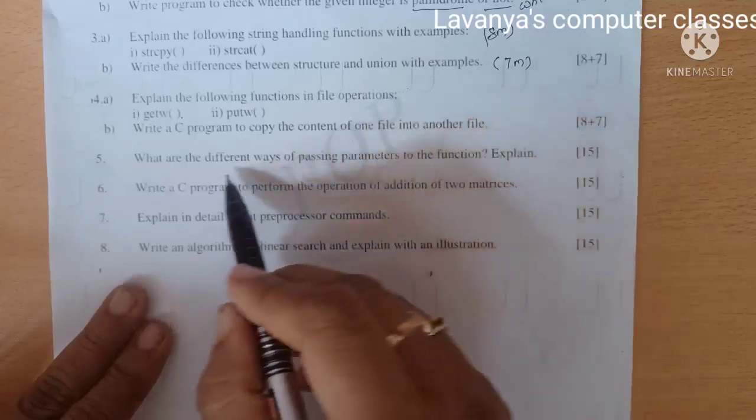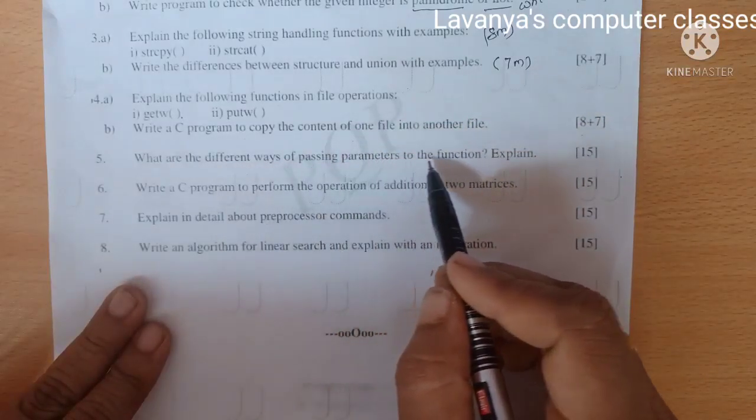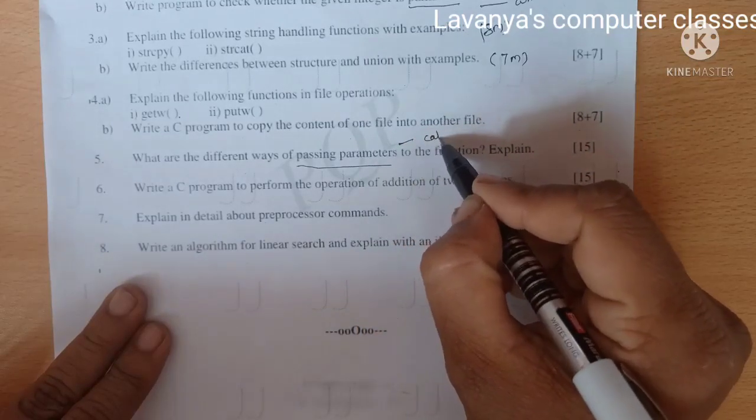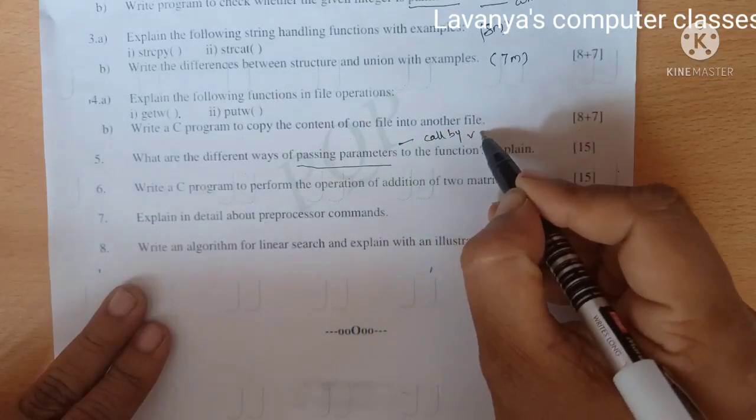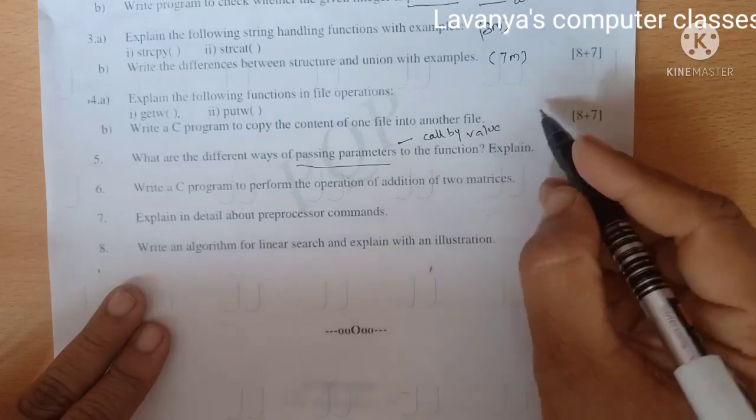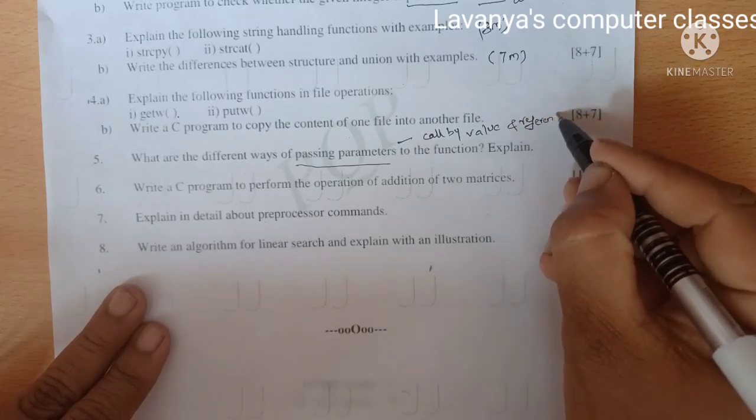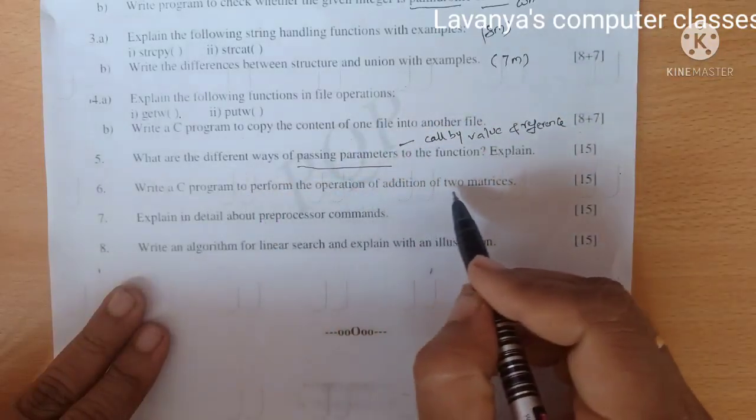Fourth A is explain the following functions in file operation: getw, putw. Both are coming under this. What are formatted input and output commands? Fourth B is write a C program to copy the content of one file to another file.